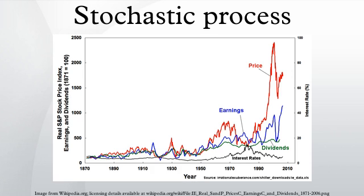In probability theory, a stochastic process, or sometimes random process, is a collection of random variables representing the evolution of some system of random values over time. This is the probabilistic counterpart to a deterministic process. Instead of describing a process which can only evolve in one way, in a stochastic or random process there is some indeterminacy — even if the initial condition is known, there are several directions in which the process may evolve.